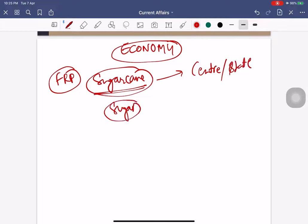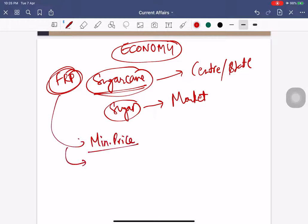Fair and remunerative price is the minimum price at which sugarcane is to be purchased by the sugar mills from the farmers. It is fixed by the Union government.